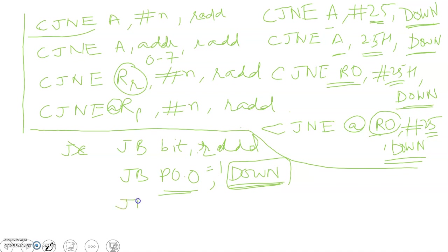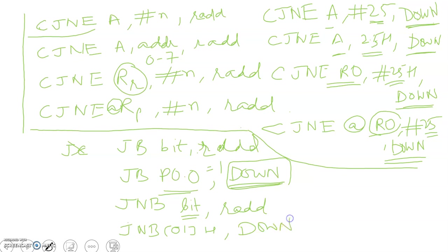Similarly we have JNB — Jump If Not Bit. For example: JNB 01H, down. It checks the content of bit address 01H. JB is jump if bit equals 1; JNB means jump if bit equals 0 — that is, if the location is 0, jump to position 'down'.